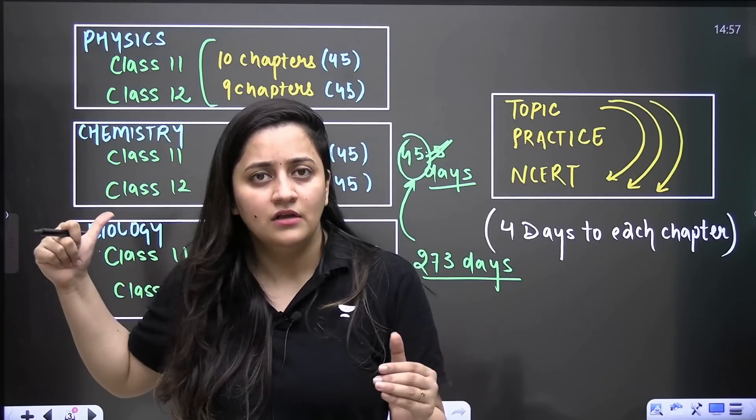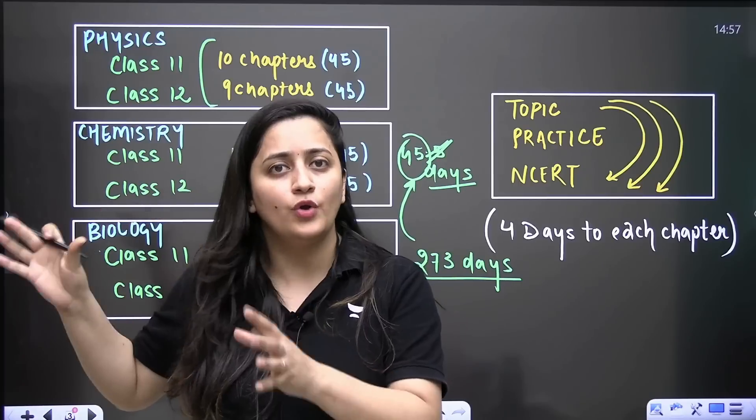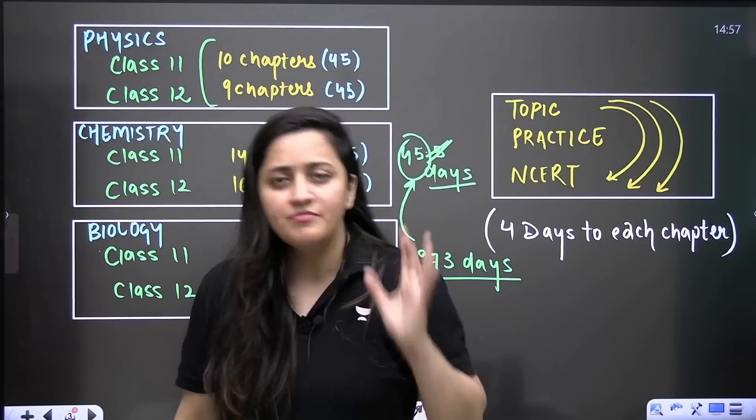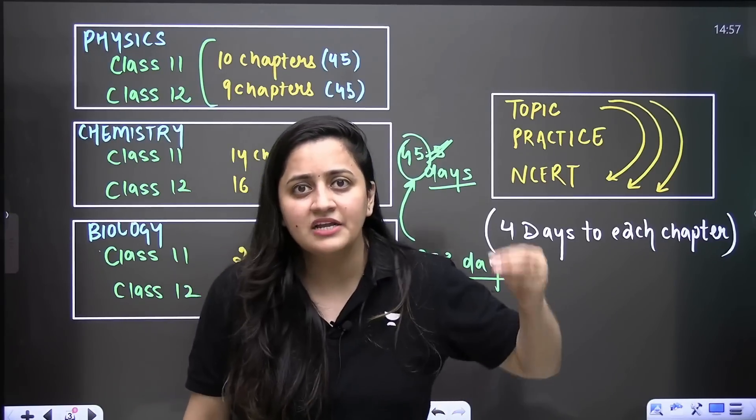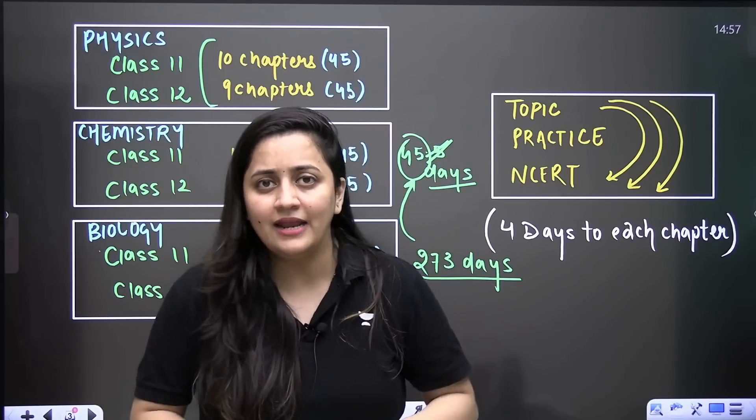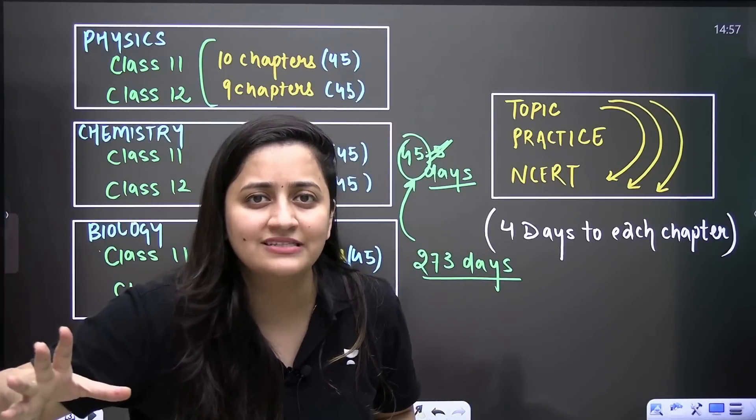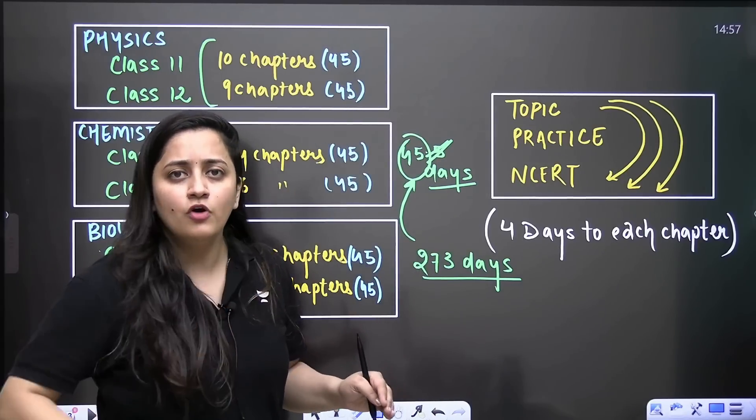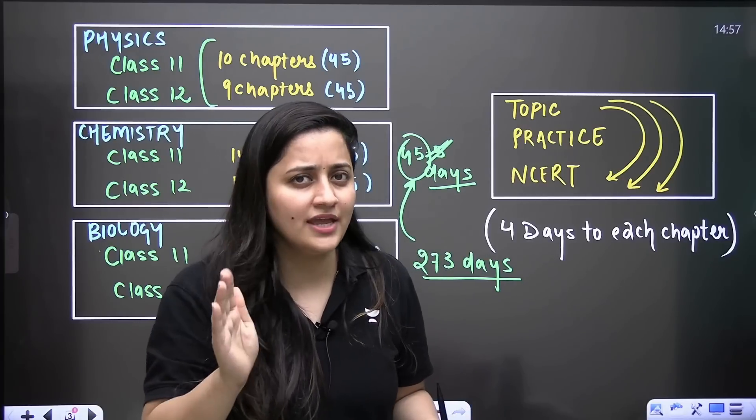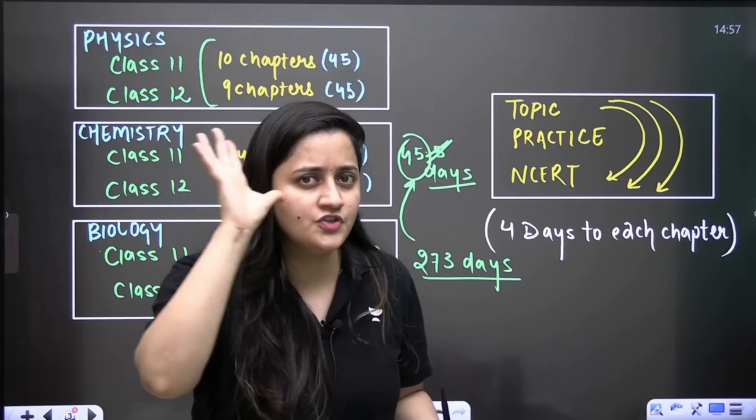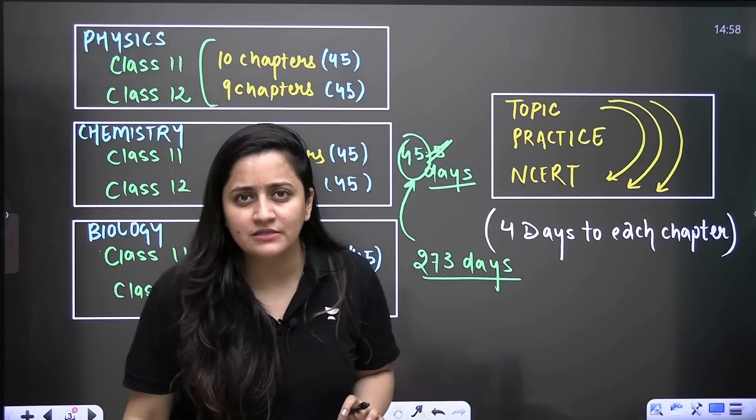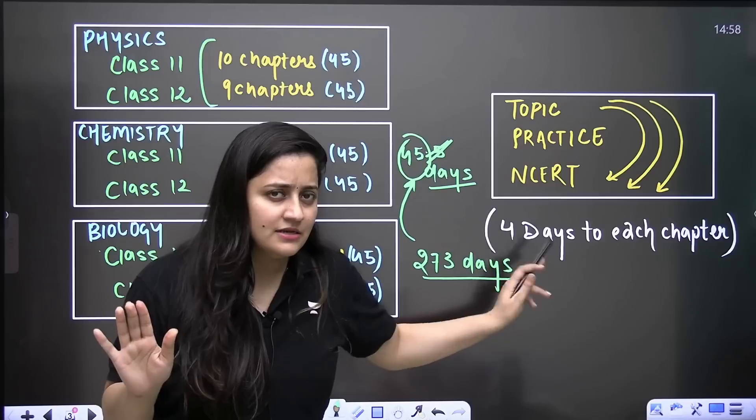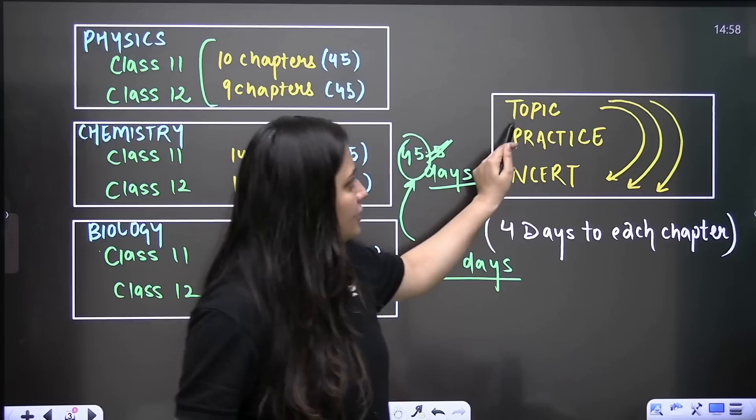Now just look at it. If I talk about the physics syllabus only, let's not talk about biology today. Every day I talk about biology. Let's talk about physics today. So can I not say that you need four days to complete each chapter? If I take the total 45.5 days, in totality, don't you think that on an average you have four days for each chapter? Don't you think that time is sufficient enough?